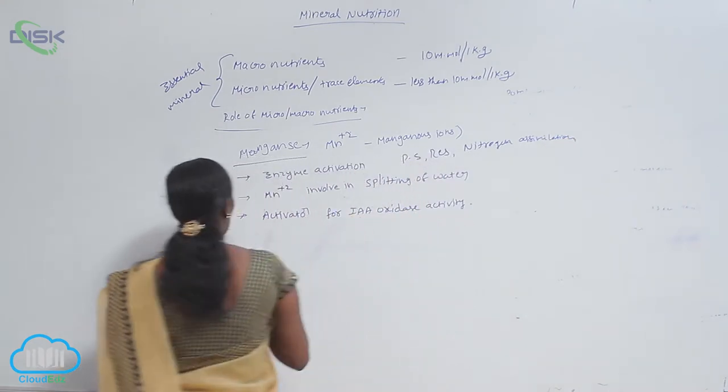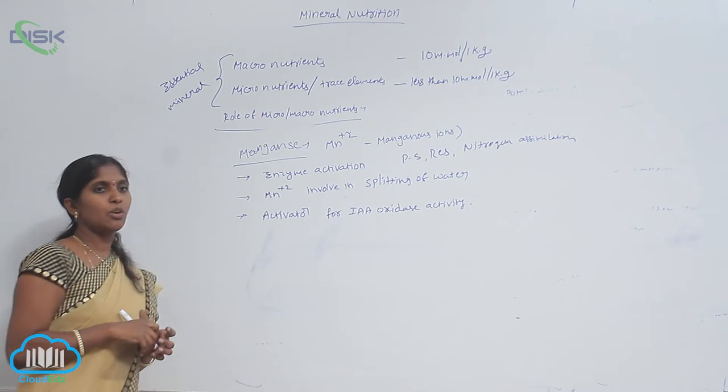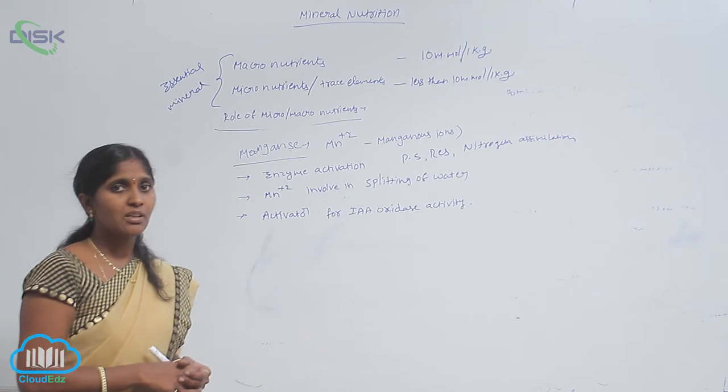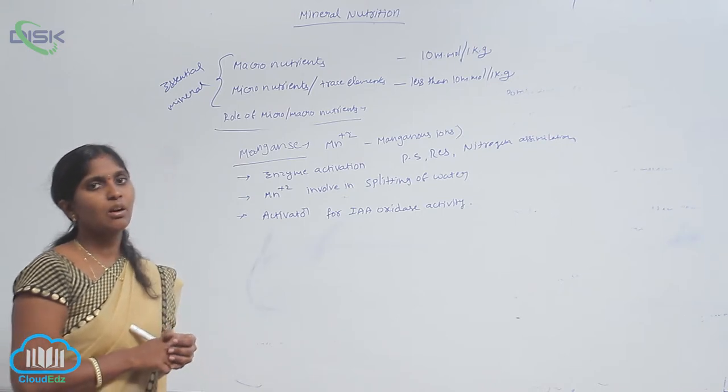During photosynthesis, the water molecule is split as 2 H+ ions, 2 electrons, and half O2.